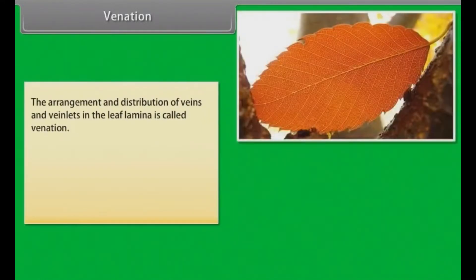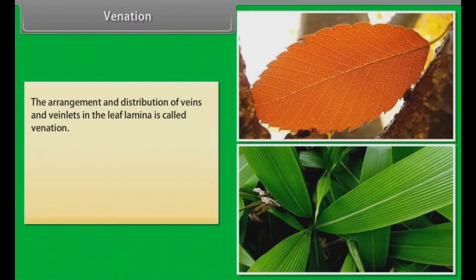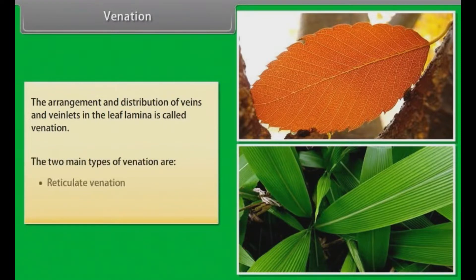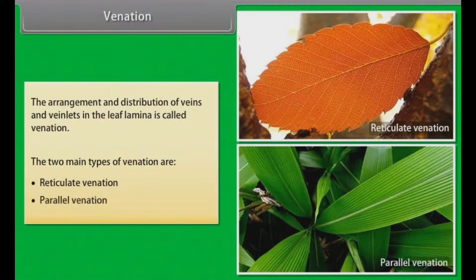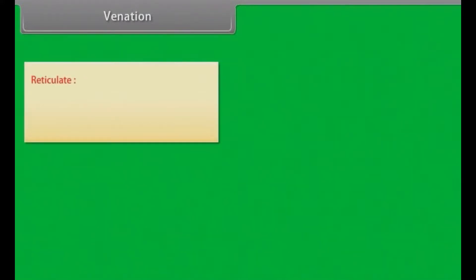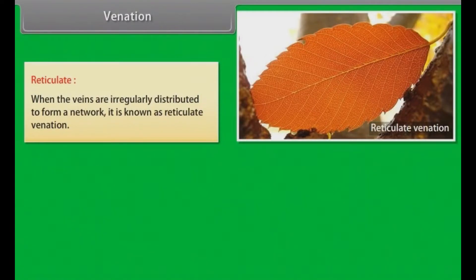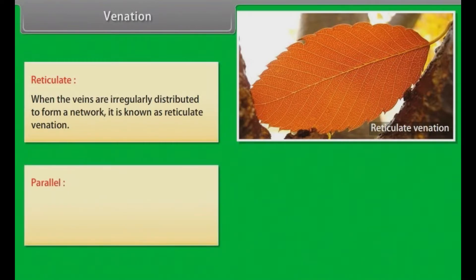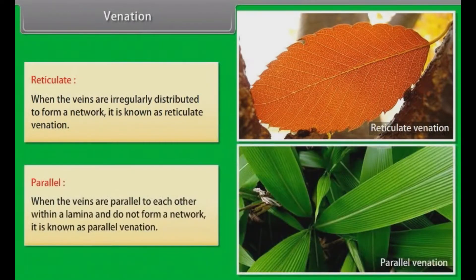Venation. The arrangement and distribution of veins and veinlets in the leaf lamina is called venation. The two main types of venation are reticulate and parallel. When the veins are irregularly distributed to form a network, it is known as reticulate venation. When the veins are parallel to each other within a lamina and do not form a network, it is known as parallel venation.